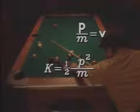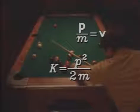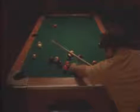Therefore, kinetic energy is P squared over 2m. All of this reveals one of the great secrets, not only of nature, but of how to play winning billiards.